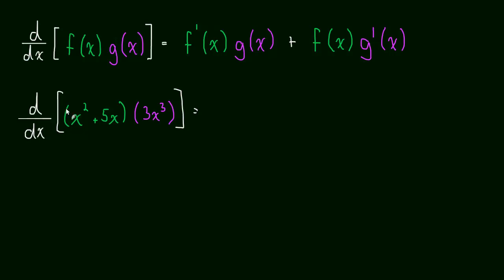The derivative of the first—what's the derivative of x² + 5x? That's 2x + 5, times the second left alone, which is 3x³, plus the first left alone, x² + 5x, times the derivative of the second, which is 9x².